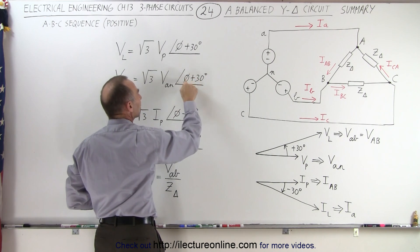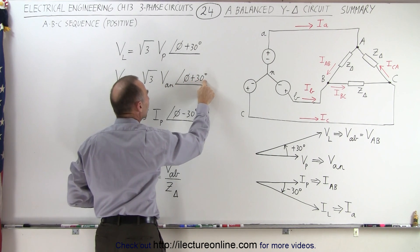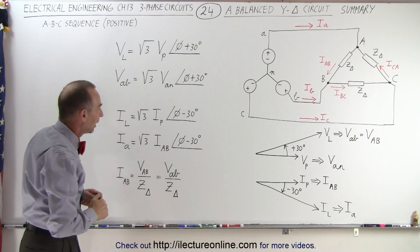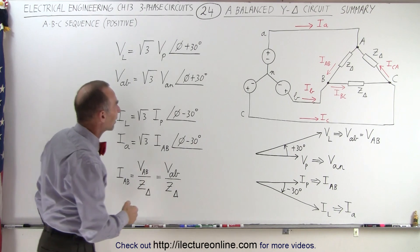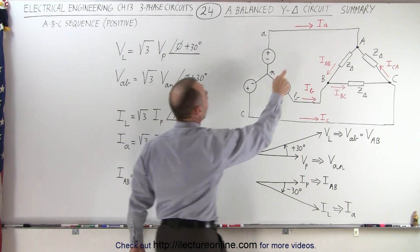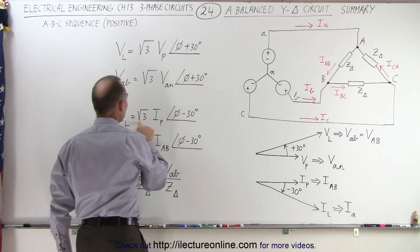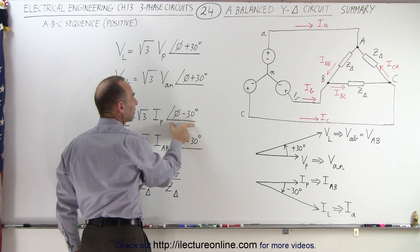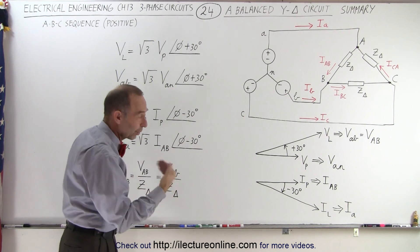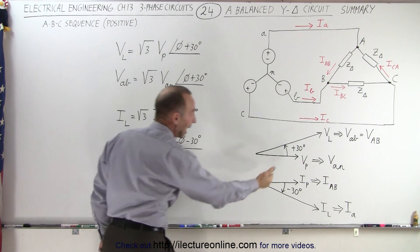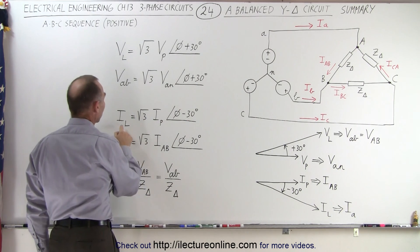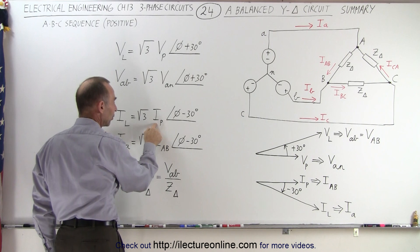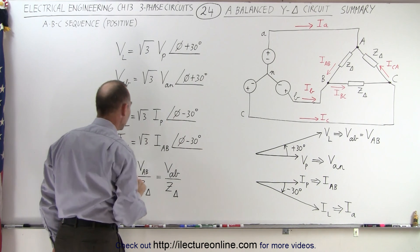Whatever the phase angle is for VAN, we add 30 degrees to get the phase angle for VAB. For the currents, the line current IA is equal to the square root of 3 times the magnitude of the phase current, with a phase angle difference of minus 30 degrees — in other words, a lag of 30 degrees. So the line current is larger by a factor of the square root of 3 than the phase current, but it lags by 30 degrees.